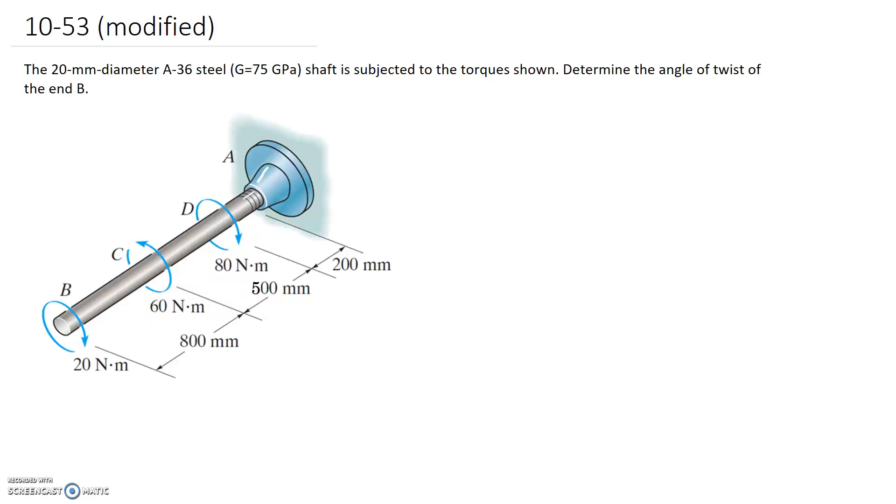In this question we have a 20mm diameter A36 steel shaft with a shear modulus of 75 gigapascals, subjected to the torques shown. We need to determine the angle of twist of end B. Looking at the diagram, point B is the endpoint of the shaft. We need to figure out how much it twists on the end, relative to point A where it's attached to the wall.